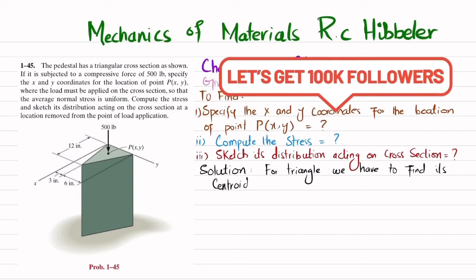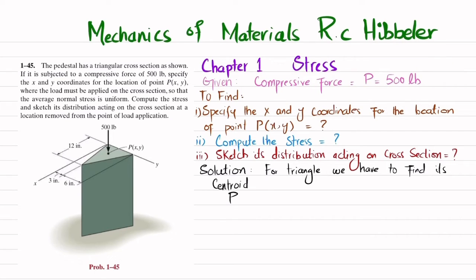For finding the centroid, we have P as the centroid. So P(x,y), its coordinates will be equal to (x1 + x2 + x3) divided by 3, which gives the x coordinate, and for y: (y1 + y2 + y3) divided by 3. You can see we have to find the centroid. This is the x-axis and this is the y-axis.